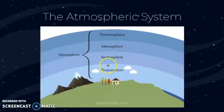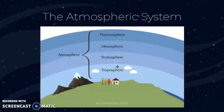In the troposphere, we have very high pressure, and this is where the greenhouse gases are — this is where the greenhouse effect takes place. This is where a lot of water vapor is, and as you ascend, the temperature actually falls.